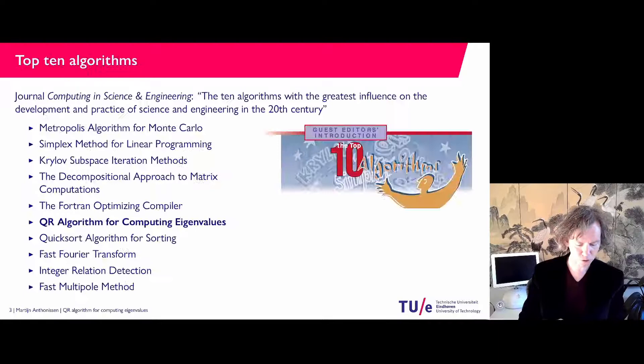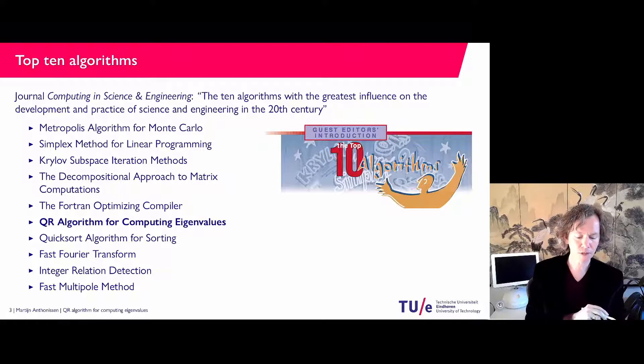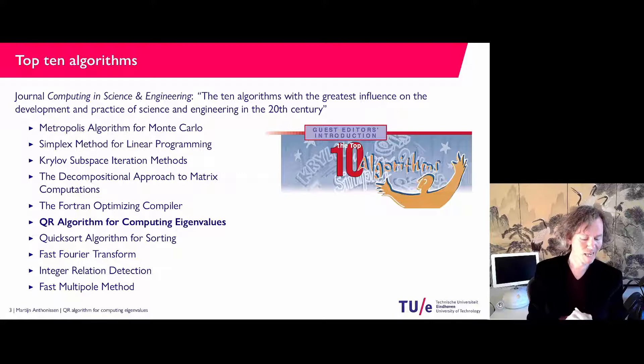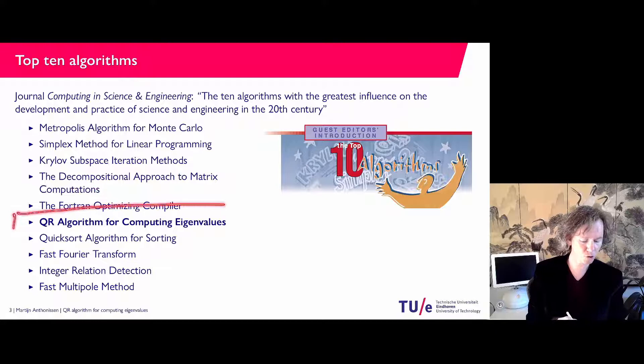Before we start, this journal — Computing in Science and Engineering — in the year 2000 picked the 10 algorithms with the greatest influence on the development and practice of science and engineering in the 20th century. You may recognize algorithms from different branches of mathematics: for instance the simplex method, Krylov subspace iteration methods for solving linear systems, the decomputational approach similar to LU factorization, and in this video the QR algorithm for computing eigenvalues.